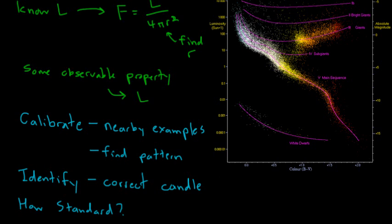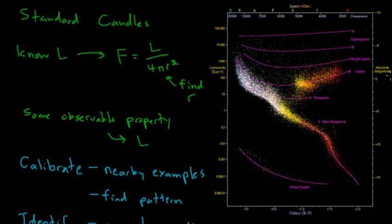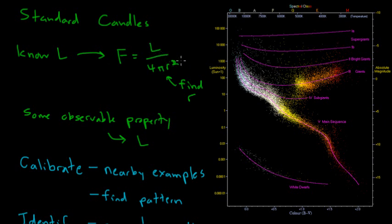So just to summarize: the main idea of a standard candle is that we want to find more and more objects where we can accurately assess what the luminosity of these objects are, in order to use that as a tool for measuring their distances. And one thing that we notice is that the brighter the object — if my telescope can only see a certain dimness of light — then the brighter the object is, the more distant we're going to be able to measure that object at. So we're going to want very bright objects with known luminosities. And in the next few videos, we'll look at a couple of examples of standard candles that are used to measure greater and greater cosmic distances.